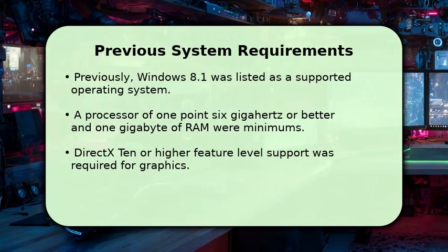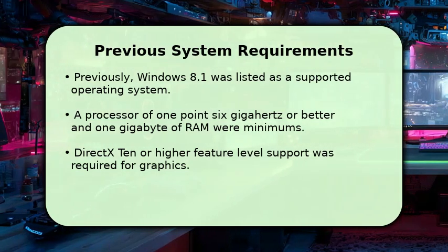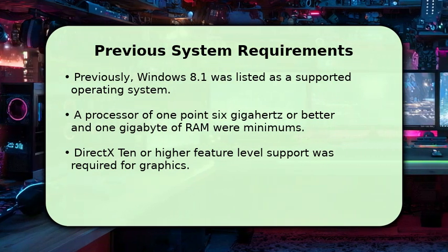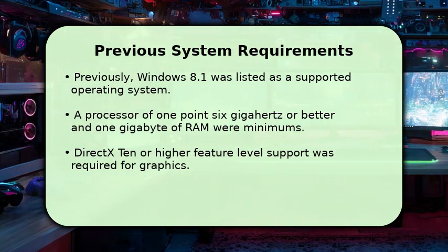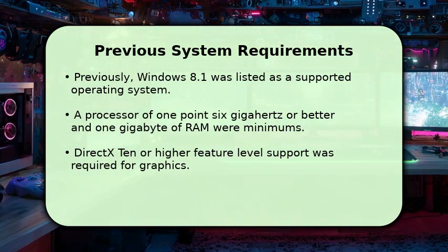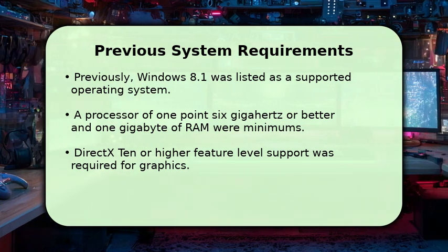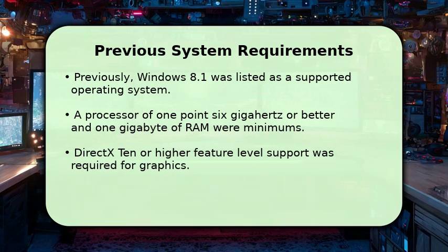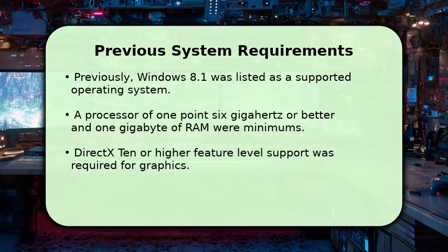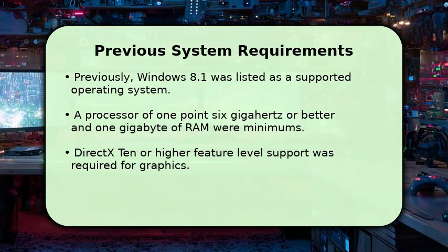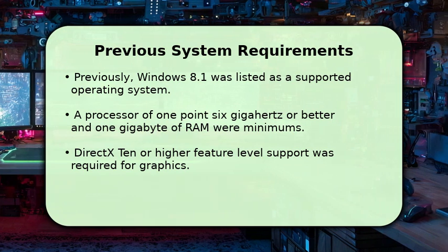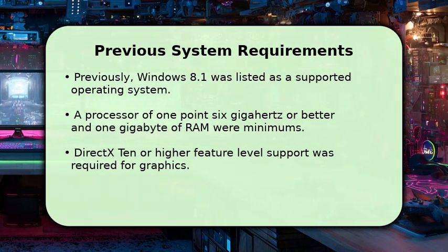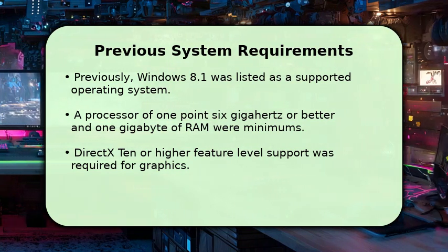Before the end of official support, playing Roblox on Windows 8.1 required meeting certain system specifications. Your computer needed a processor from 2005 or newer, running at 1.6 GHz or faster, and at least 1 GB of RAM. Graphics required DirectX 10 or higher feature-level support. Additionally, a stable internet connection of at least 4 to 8 megabits per second was recommended for smooth gameplay.